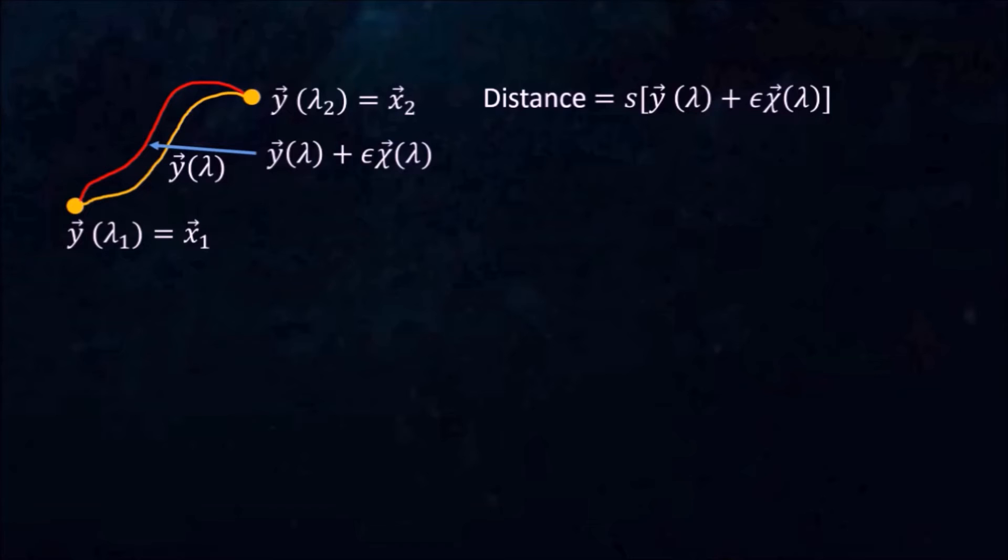We can now expand s in powers of epsilon. To simplify our notation, we let x dot be the derivative of x with respect to lambda. The distance along an arbitrary curve, x, can then be expressed as an integral of lambda.